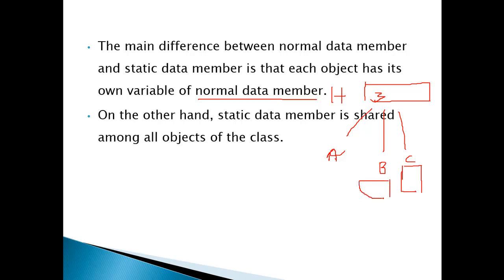Now we have three objects created for the Hello class. What happens in this case: object a will maintain an individual memory location for z, object b will also maintain a separate location for z, and object c will also maintain a separate memory location for z.